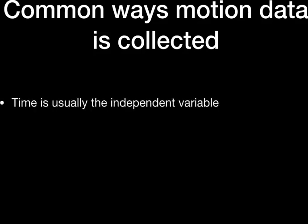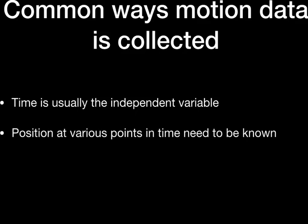Let's say we've got an object that's moving and we need to collect some data. The data we're going to need to collect — we need to know something about the time, and time is usually the independent variable because we can decide how long we want to let the object move. We can measure where it is at one point in time and then where it is at a different point in time. So we'll need something to measure the position of the object at different points in time.